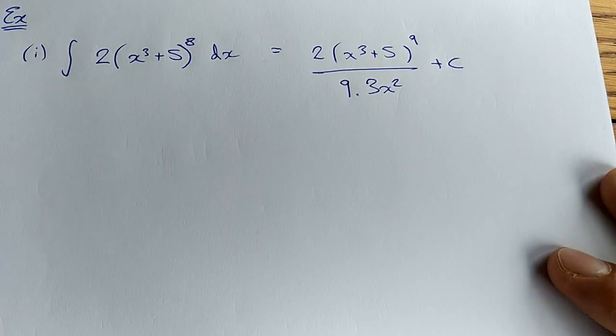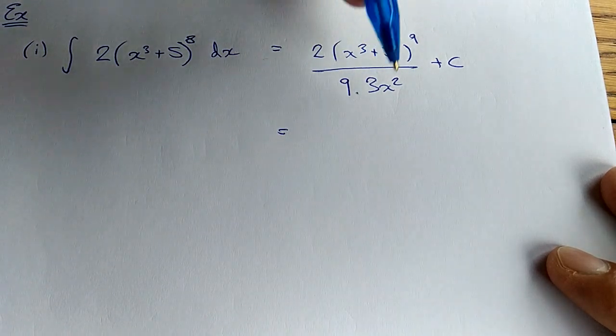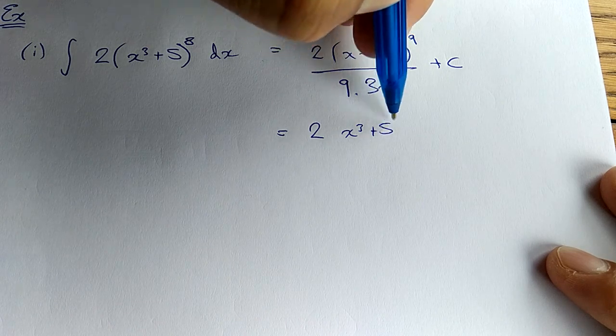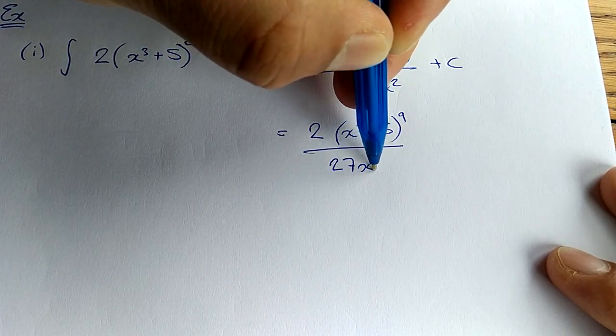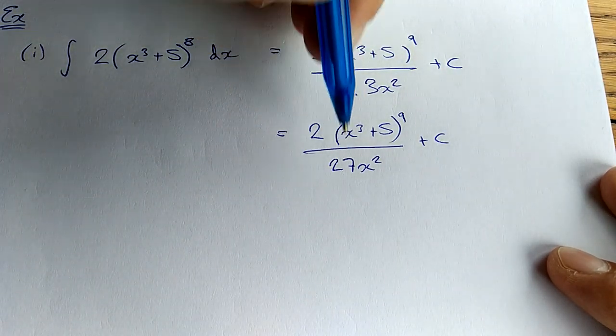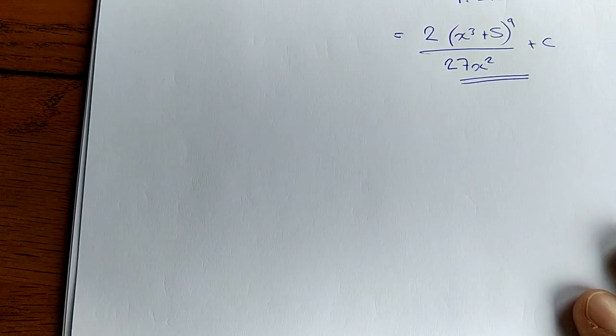So I'm going to do exactly that. The derivative of this would be 3x squared plus 0. Don't forget the plus c. We just tidy this up and we're done. So that's going to be 27x squared, so it's 2 bracket x cubed plus 5 to the power of 9 over 27x squared plus c. And obviously if these two numbers could be simplified, you would. And that's it.